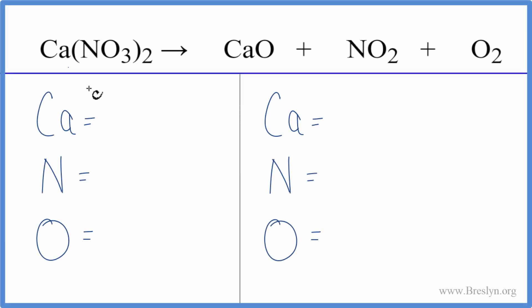In this equation we have the thermal decomposition of calcium nitrate. We have Ca(NO3)2 and it's going to break apart after it's heated into these compounds here. Let's count the atoms up on each side of the equation to balance it and we need to be very careful with this equation as we do that.